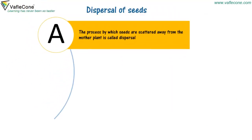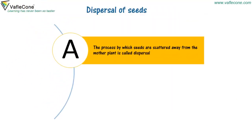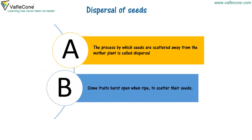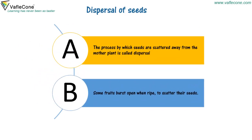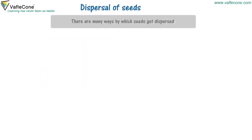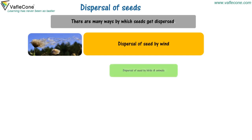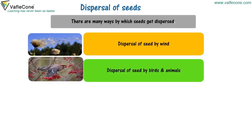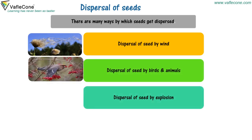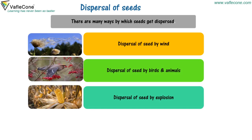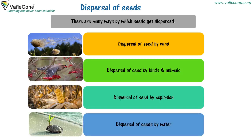Dispersal of seeds. The process by which seeds are scattered away from the mother plant is called dispersal. Some fruits burst open when ripe to scatter their seeds. There are many ways by which seeds get dispersed: dispersal by wind, dispersal by birds and animals, dispersal by explosion, and dispersal by water.